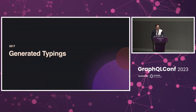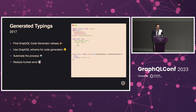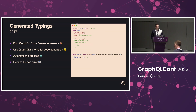Then in 2017, we entered the generated typings era. We had the first GraphQL code generator release, and finally we could use the SDL of the GraphQL schema and also the GraphQL operations for generating types for specific GraphQL operations. What you did instead was run your code generation tool, import the types for your GraphQL operation, and then use the generated types within your code. We basically automated the process of writing type definitions manually, and reduced human error because the machine, hopefully, does not make mistakes.